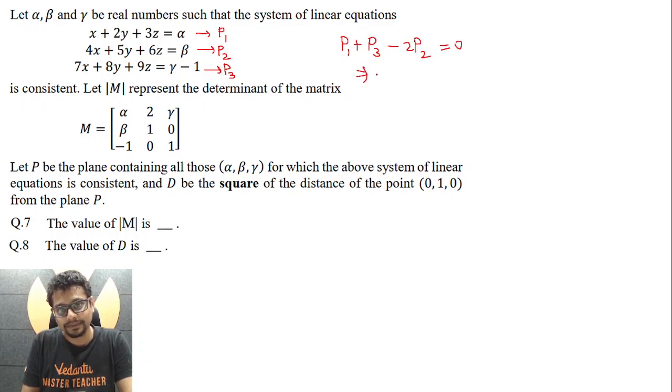So that essentially means alpha plus gamma minus 1 minus 2 beta is supposed to be 0. That essentially means alpha minus 2 beta plus gamma equal to 1.